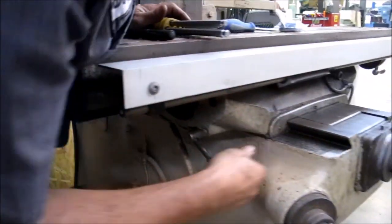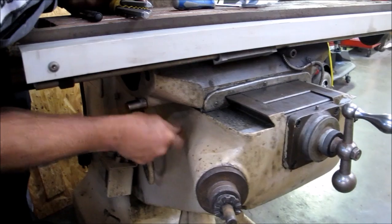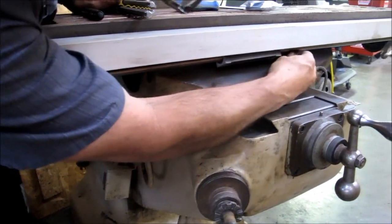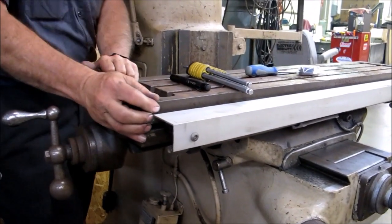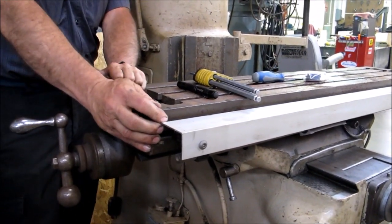And then what you will do is you will lock your Y-axis lock, unlock your X-axis lock, which this one is unlocked, and you will attempt to rock it. If you have no rock, then you're in good shape.